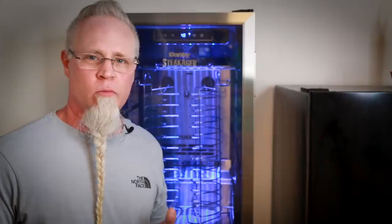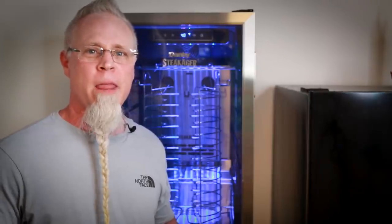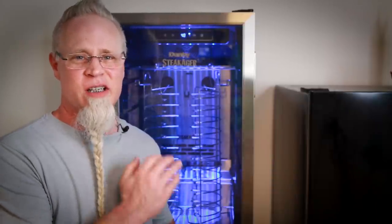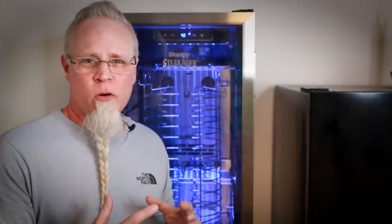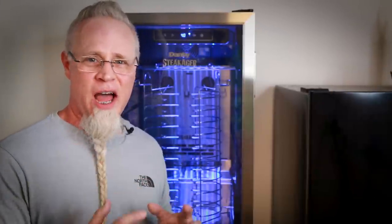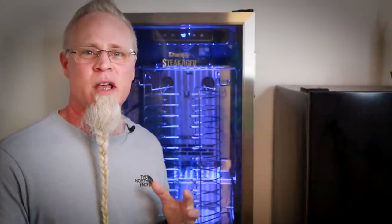Well, a Steakager Pro 40 is a dry aging slash curing cabinet that has a system in it that creates the perfect microclimate or environment in order to dry age entire cut subprimal cuts of beef, or it can allow you to cure charcuterie.